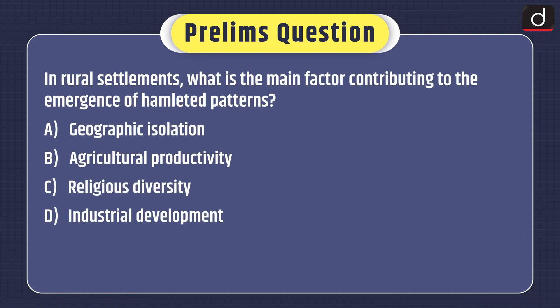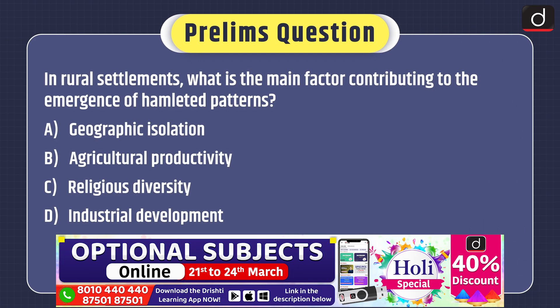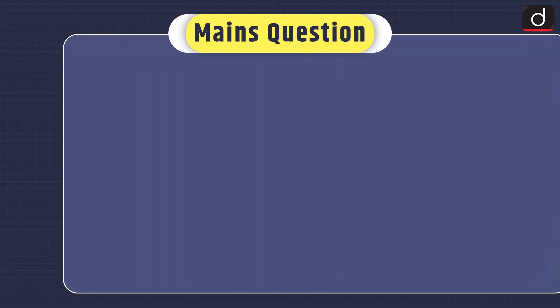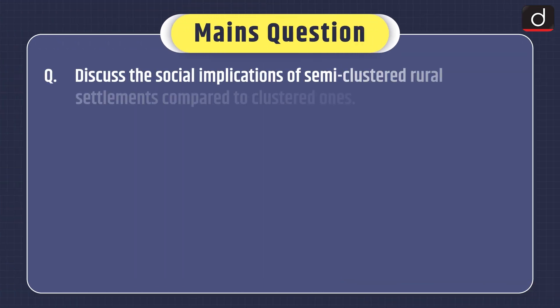Now is the time for practice questions. Prelims-based question: In rural settlements, what is the main factor contributing to the emergence of the hamleted patterns? Geographic isolation, agricultural productivity, religious diversity, or industrial development? Mains practice: Discuss the social implications of semi-clustered rural settlements compared to clustered ones.